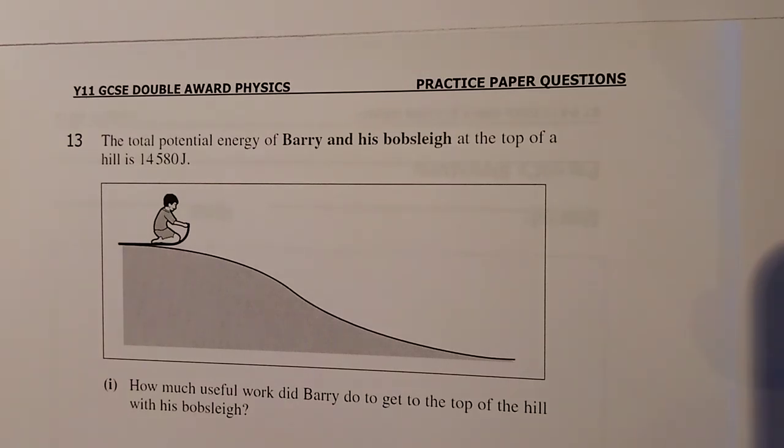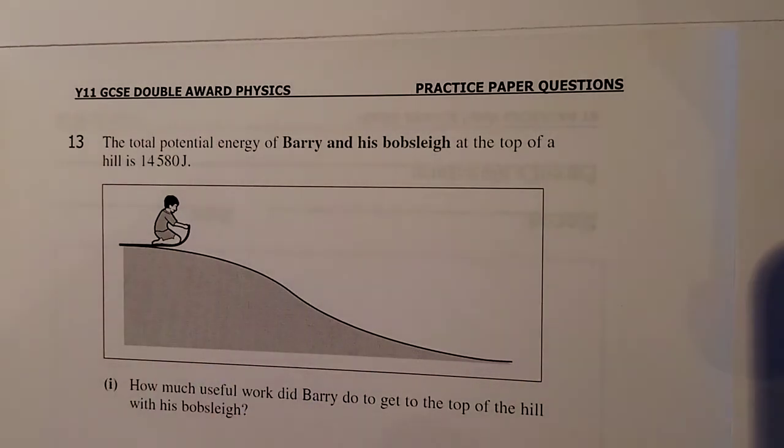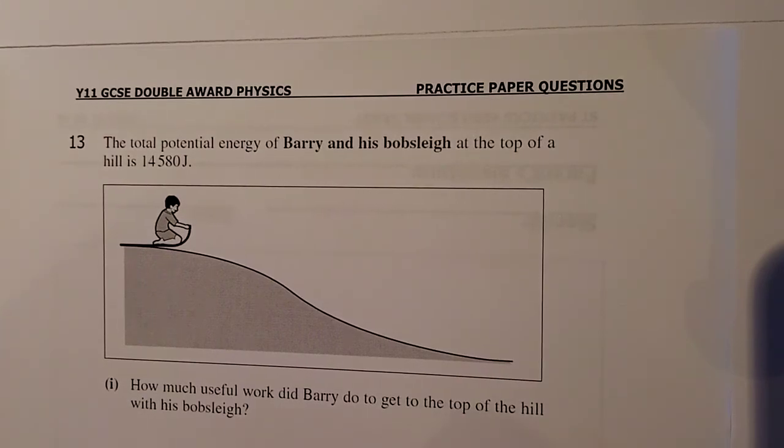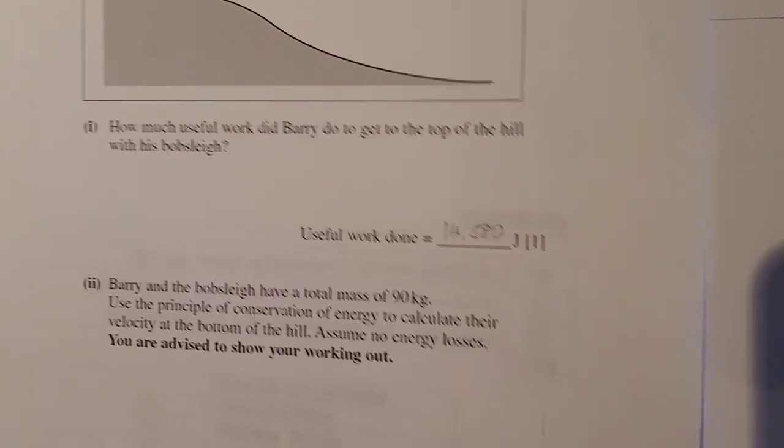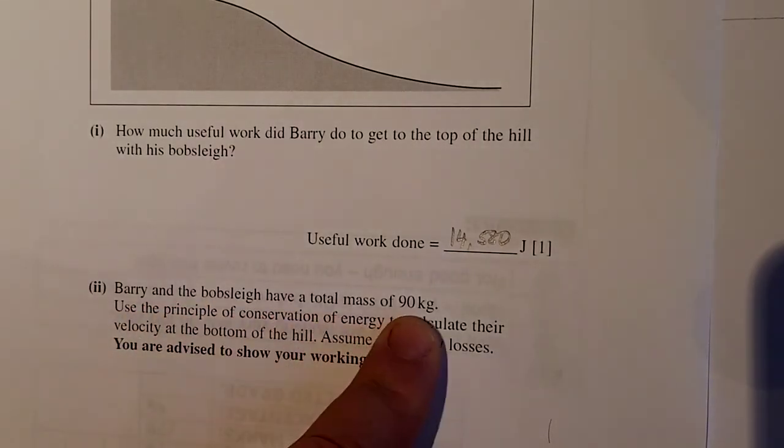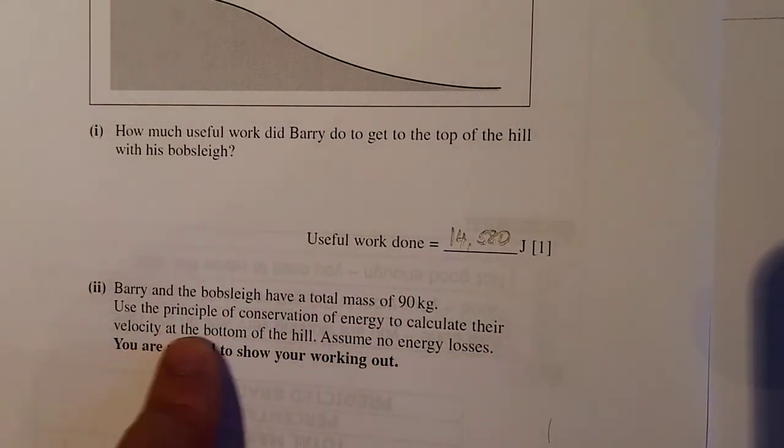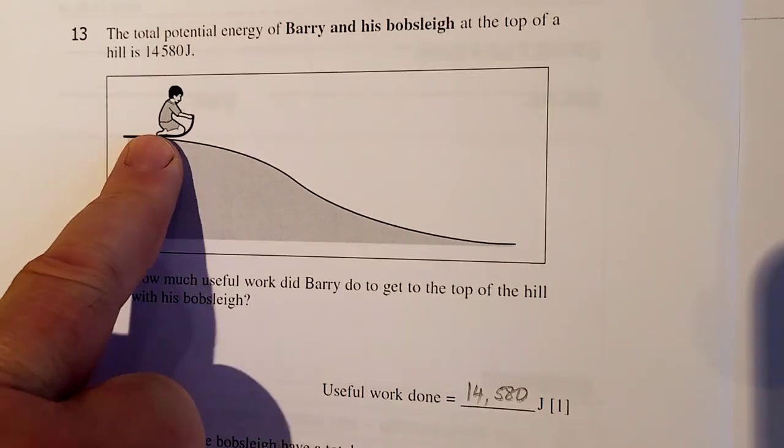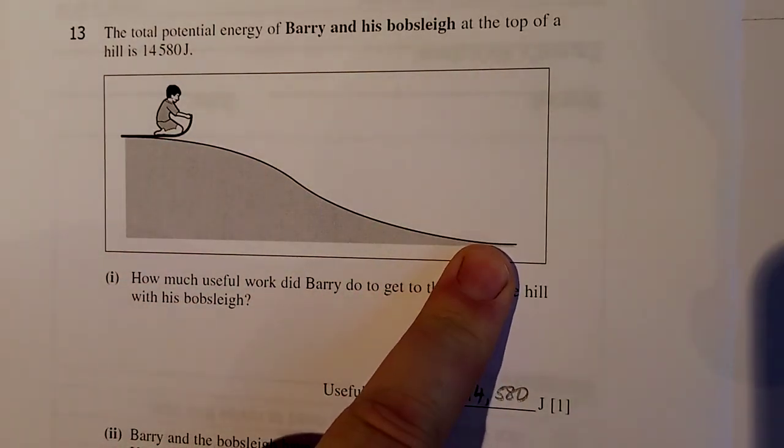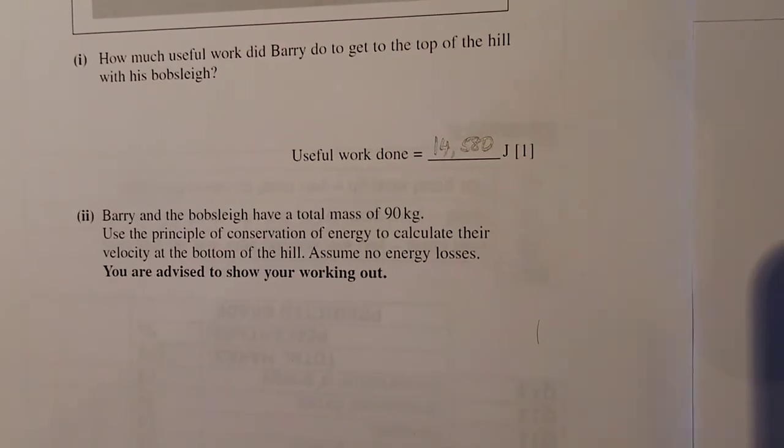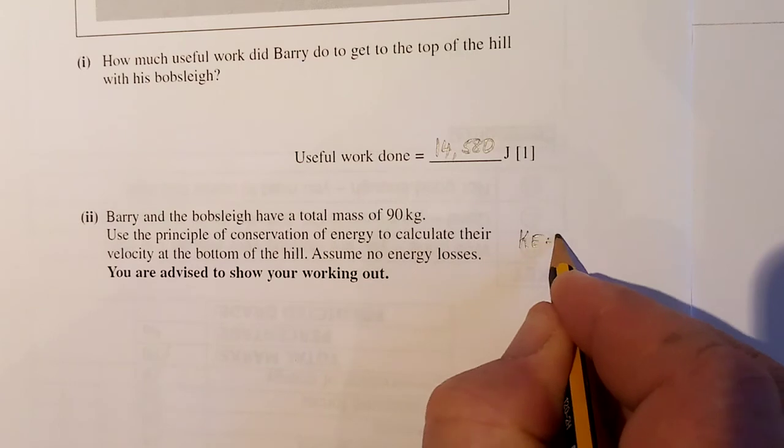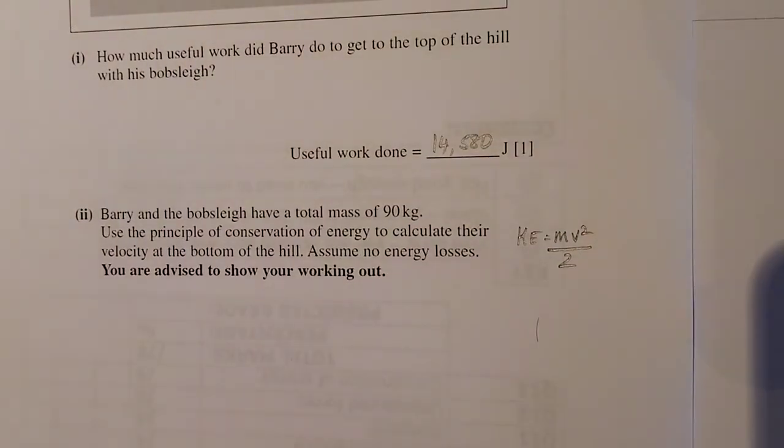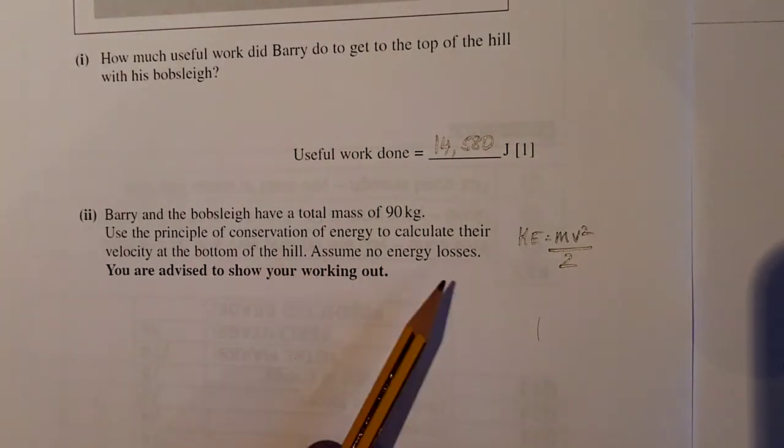The total potential energy of Barry and his bobsleigh at the top of the hill is 14,580 joules. How much useful work did Barry get to the top of the hill with his bobsleigh? Well the answer must be, if that's what he wanted to do, he must have spent 14,580 joules to get him to the top. There's only one mark. Right? Barry and the bobsleigh have a total mass of 90 kilos. Use the principle of conservation of energy to calculate their velocity at the bottom of the hill. Assume no energy losses. So that energy at the top, which is potential energy, poor old Barry and the bobsleigh goes to the bottom. So all that energy is going to be in kinetic energy. Right? So kinetic energy, we need to know the formula. Kinetic energy is equal to mv squared over 2. Now if you don't know it, I've told you, time is a number. You should know it.